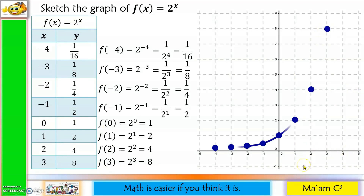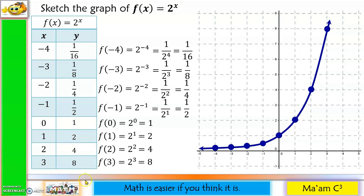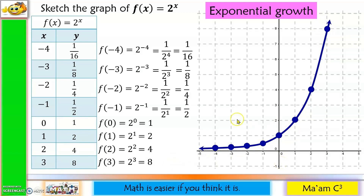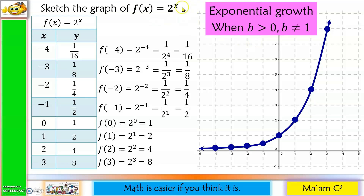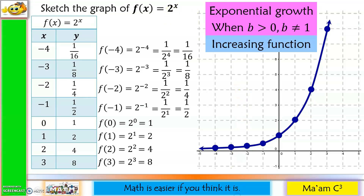Now let us connect the points. Notice that as x increases by 1 unit, y doubles its value from the previous value — from 1 to 2, 2 to 4, 4 to 8, and then 16. This is called exponential growth, and it happens only when the base is greater than 0 but not equal to 1. It is an increasing function.